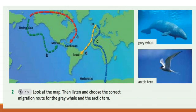Next task, exercise 2. Look at the map, then listen and choose the correct migration route for the gray whale and the Arctic tern. Now we can see four routes: A, B, C, D. Now let's listen and choose the correct migration route for the gray whale and the Arctic tern.